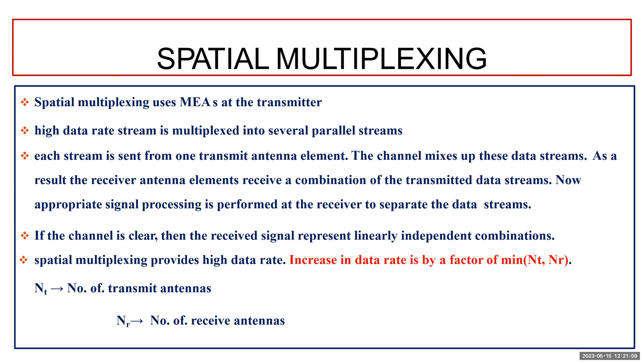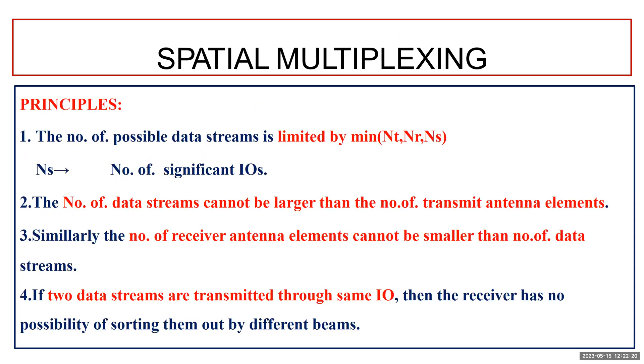If you have NT number of transmitting antenna elements and NR number of receiving antenna elements, the data rate is increased by a factor of minimum of NT, NR. In the previous structures and diverse techniques, it was the product of NT into NR. Now we have increased the data rate or the capacity by the minimum value of NT, NR.